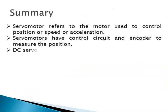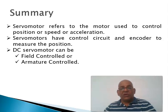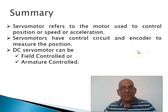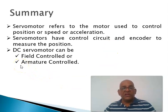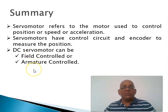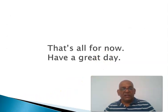To summarize: a servo motor is any motor used to control position, speed, or acceleration. Servo motors have a control circuit and an encoder to measure the position of the shaft. DC motors can be either field-controlled or armature-controlled. That is all for today — have a great day.